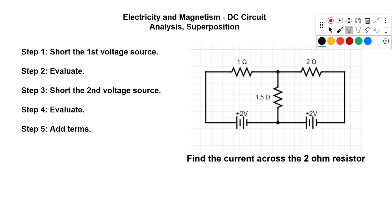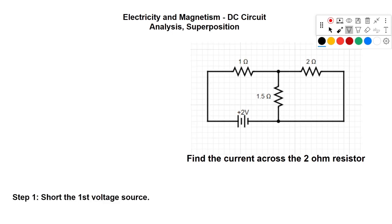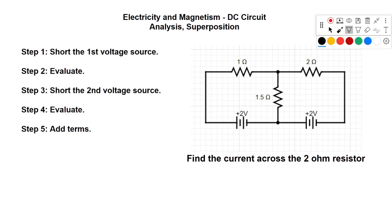We're going to look at the DC circuit shown here and follow the five steps outlined on your left. Superposition is the idea of taking a circuit with more than one voltage or current source, and as you can see in our original circuit we have two voltage sources, simplifying it so that you're dealing with a circuit with just a single voltage source, evaluating your terms and then summing them up at the end.